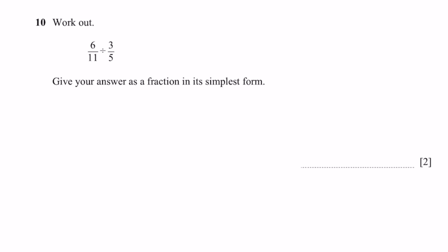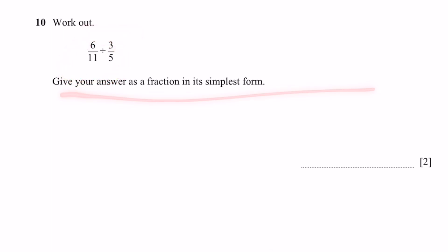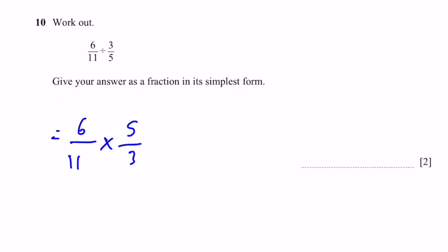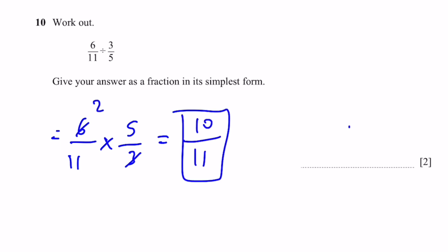Question 10. Work out 6/11 divided by 3/5. Give your answer as a fraction in simplest form. That equals 6/11 multiplied by 5/3, because we invert the second fraction. That gives 10/11.